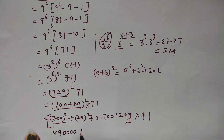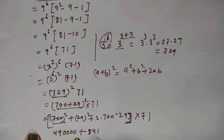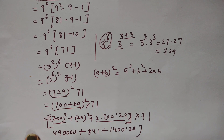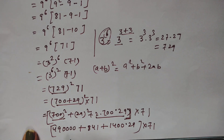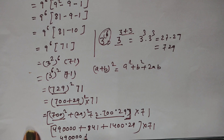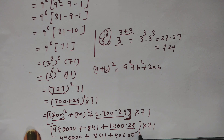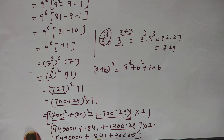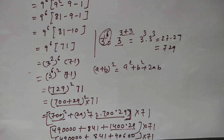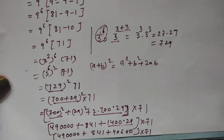Applying the identity: 700 squared is 490,000; 29 squared is 841; and 2ab is 2 times 700 times 29, which equals 14 times 2900, giving 40,600. So inside the bracket we have 490,000 plus 841 plus 40,600, multiplied by 71.